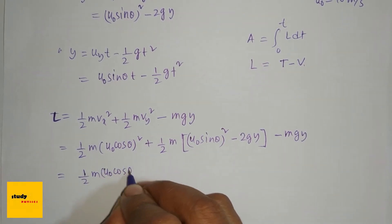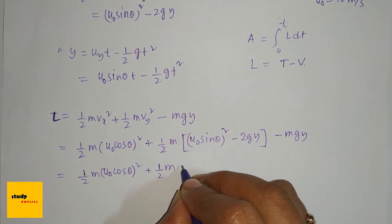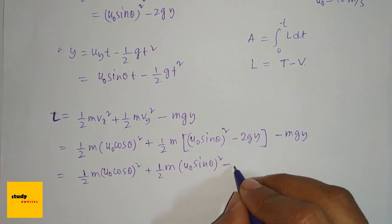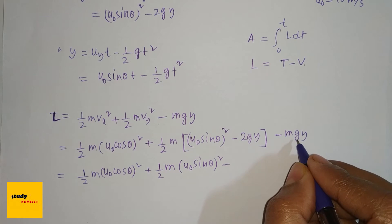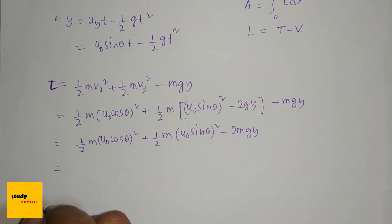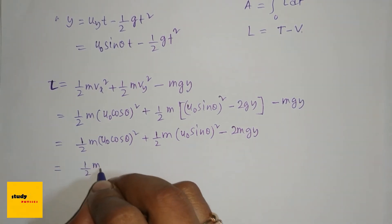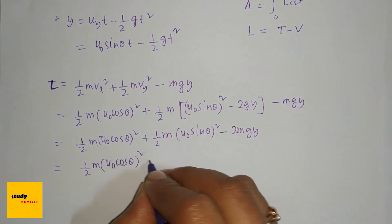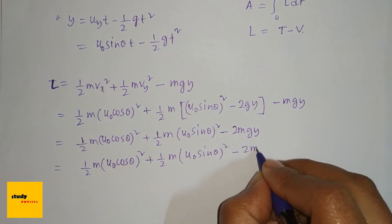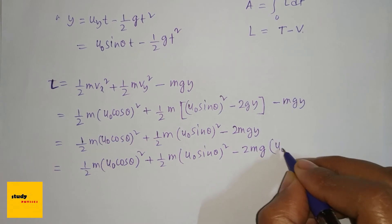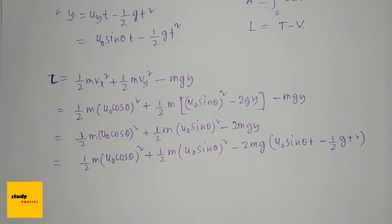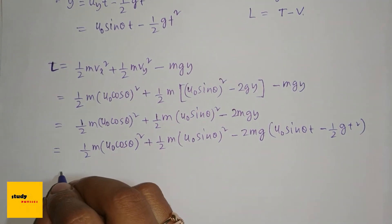Substituting: L = ½m(u₀ cos θ)² + ½m(u₀ sin θ)² − 2mgy. Since v_y² = (u₀ sin θ)² − 2gy, the −2gy term contributes. Expanding fully: L = ½m(u₀ cos θ)² + ½m(u₀ sin θ)² − 2mg·(u₀ sin θ · t − ½g·t²).